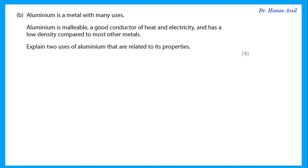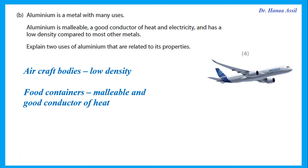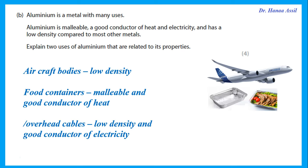Aluminium is malleable, a good conductor of heat and electricity, and has low density compared to most metals. Explain two uses related to its properties. For example: aluminium is used to make aircraft bodies because of its low density. Another use is food containers because it is malleable and a good conductor of heat, or overhead cables because of low density and good electrical conductivity.